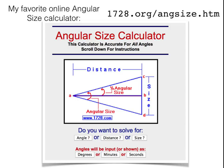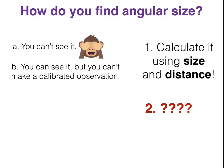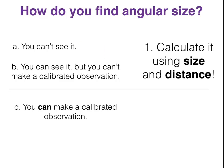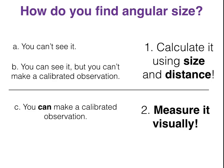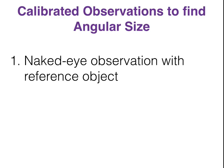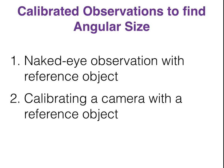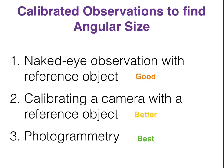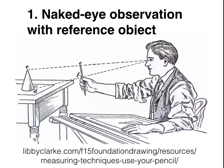Is there another method of finding angular size? Yes. When can you use it? When you can make a calibrated observation. There are three different ways: one is a naked eye observation with a reference object, another is calibrating a camera with a reference object, and the third is photogrammetry. For a naked eye observation, artists have known for years that you can take a pencil and cinch your thumb up on it to get an angle — that angle of the cone is the same angle you see. For the moon, you could hold up a small object until it matches the size of the moon in the sky, measure the distance from the object to your eye, and get a ballpark estimate of the angular size.